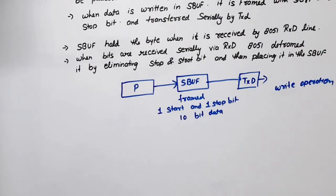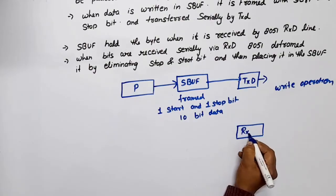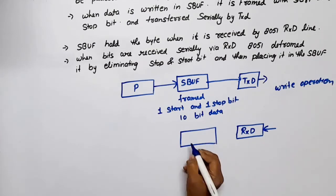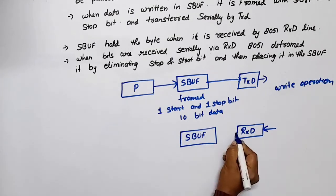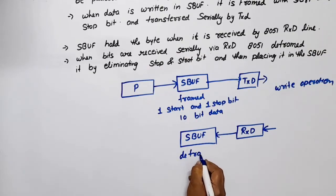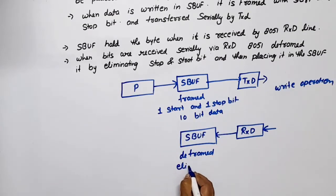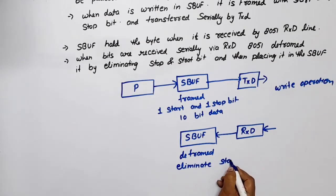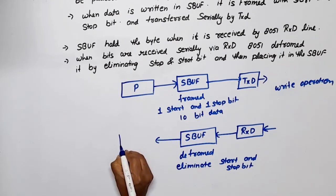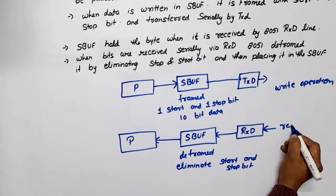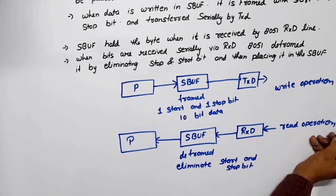When data is received, data comes in via the RXD line and is first held by the serial buffer. The data received from RXD is then deframed — meaning the extra bits (start bit and stop bit) that were added during transmission are eliminated. After that, the 8-bit data is read by the processor. This is called a read operation. In both cases, the same serial buffer register is used.